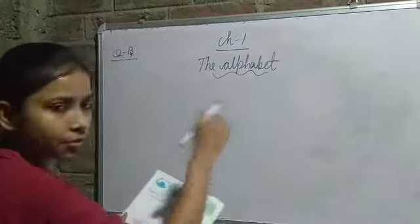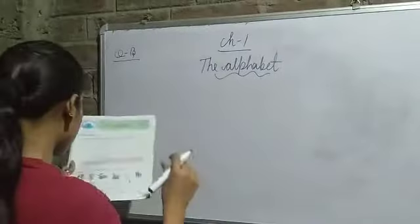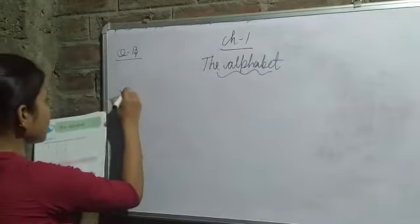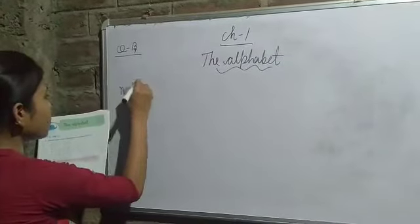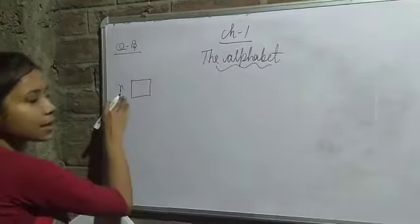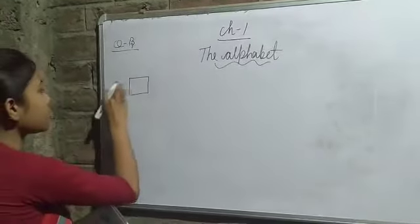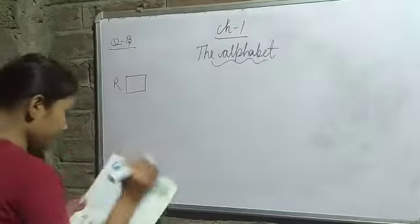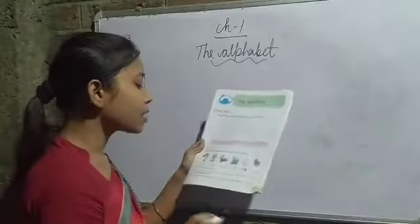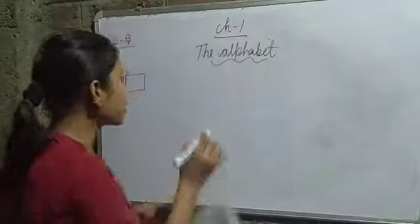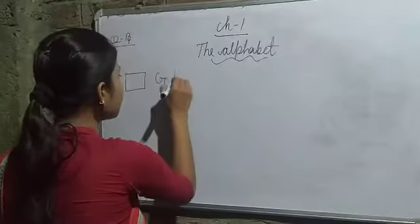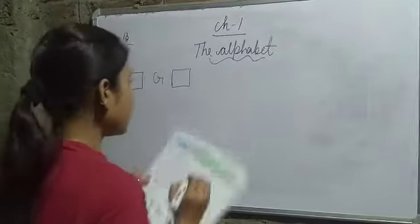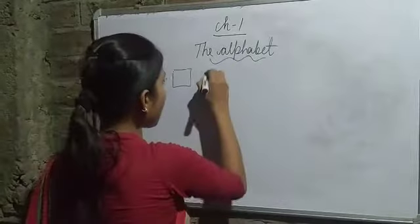Here we have the first word: rain. I will write the first letter - for rain I will write 'r'. Then we have the picture of a girl and the word 'girl' - for girl I will use 'g'. And the box with 'nest'.